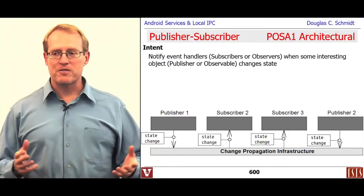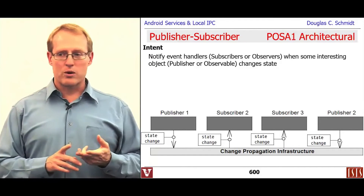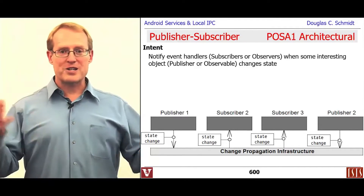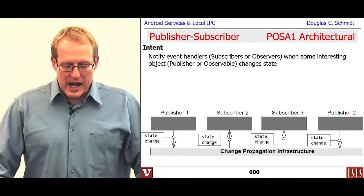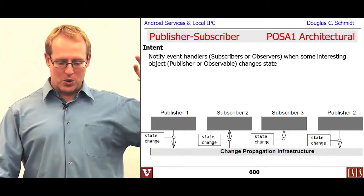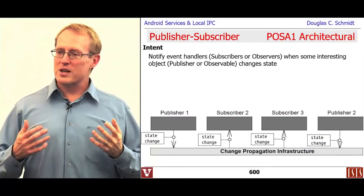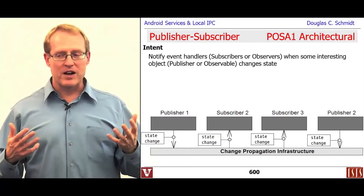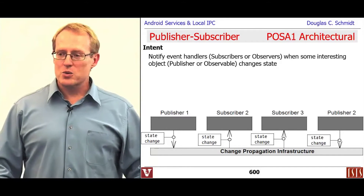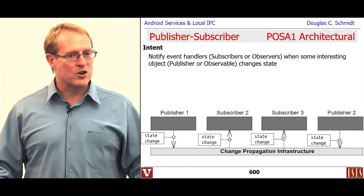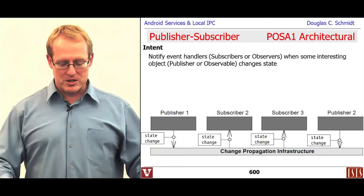The intent of this pattern is to notify event handlers — which could be subscribers, observers, broadcast receivers, or whatever you want to call them — when something interesting happens, based on publishers or observables or subjects changing state. So when an interesting state change occurs, like the battery becoming low, you want to be able to notify interested subscribers that something has taken place.